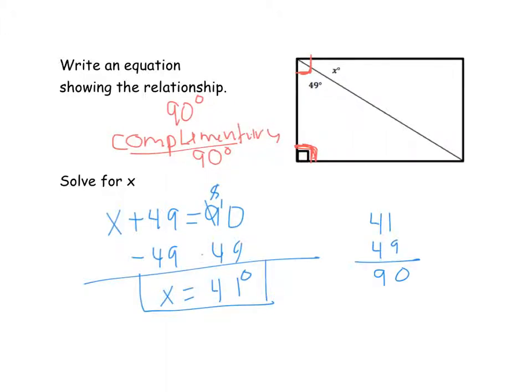All right, so since we knew that those two angles were complementary and added to 90 degrees, I could put the sum of them equal to 90, and then, since it was plus 49, we had to get rid of that positive 49, so we subtracted 49 to get 41. And then I checked my work, 41 plus 49 equals 90, so I knew that x had to be 41 degrees.